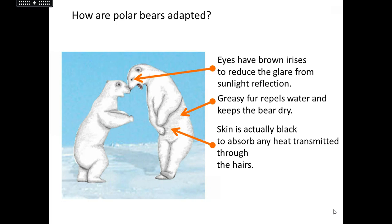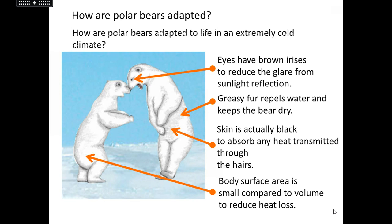Underneath all of that fur, the polar bear's skin is actually black in colour. This is linked to physics — black surfaces are really good at absorbing heat. So if any heat waves get through that hair, they're absorbed really quickly and effectively into the skin. Lastly, the polar bear has a big volume compared to its surface area, and this is to reduce heat loss. Surface area to volume ratio is something that comes up a lot in biology, chemistry, and physics — if you're not confident with it, check the BBC Bitesize links. If you've got a very small surface area and a big body, you'll reduce heat loss.